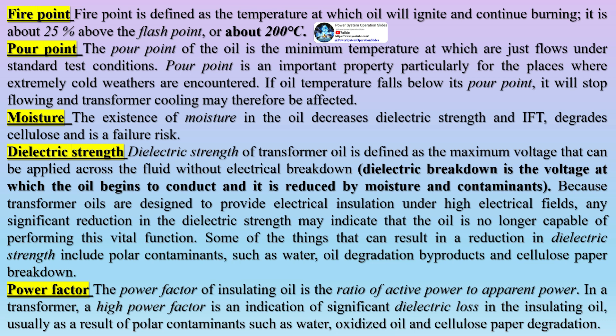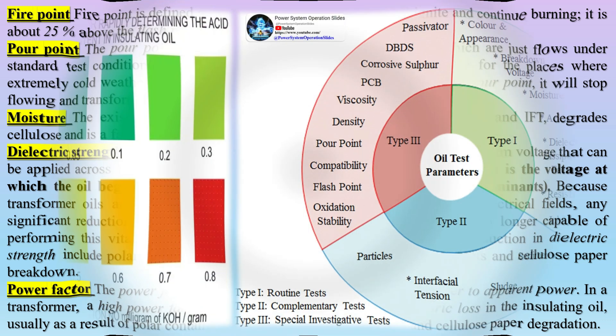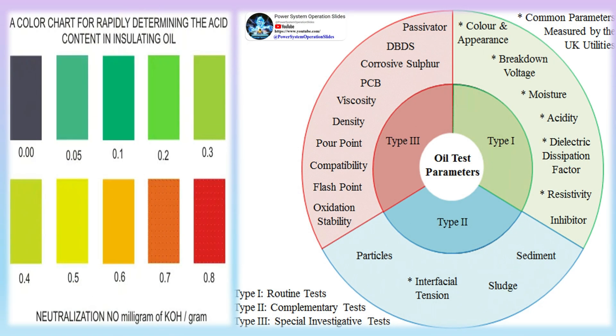Power factor: the power factor of insulating oil is the ratio of active power to apparent power. In a transformer, a high power factor is an indication of significant dielectric loss in the insulating oil, usually as a result of polar contaminants such as water, oxidized oil, and cellulose paper degradation.